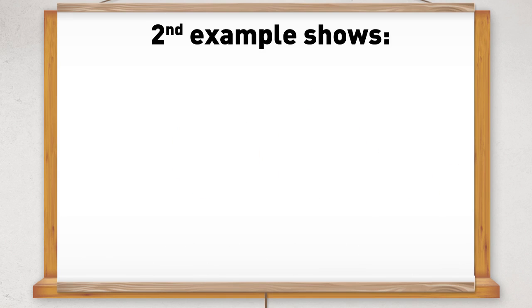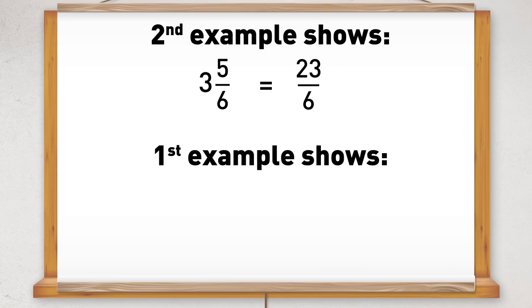This second diagram shows that 3 and 5 sixths is equal to 23 sixths. The first diagram shows that 1 and 3 eighths is equal to 11 eighths.